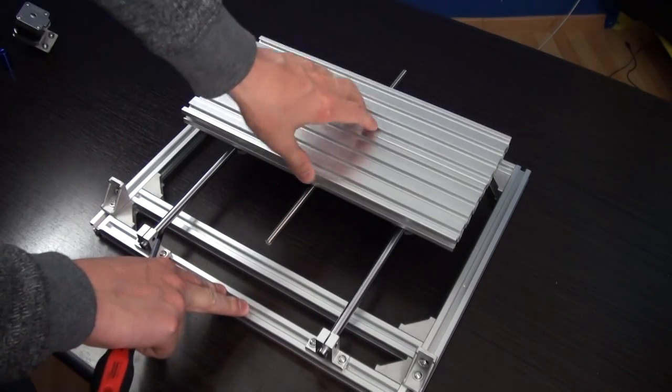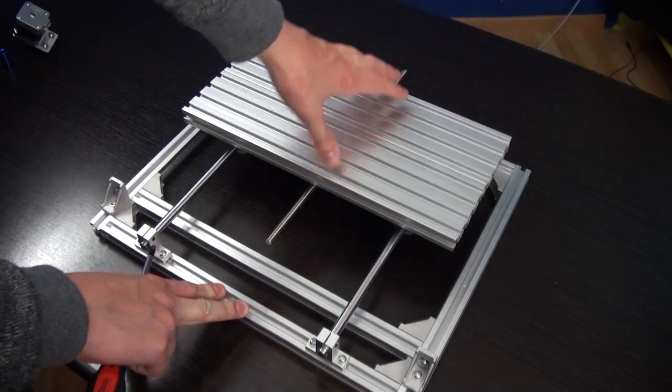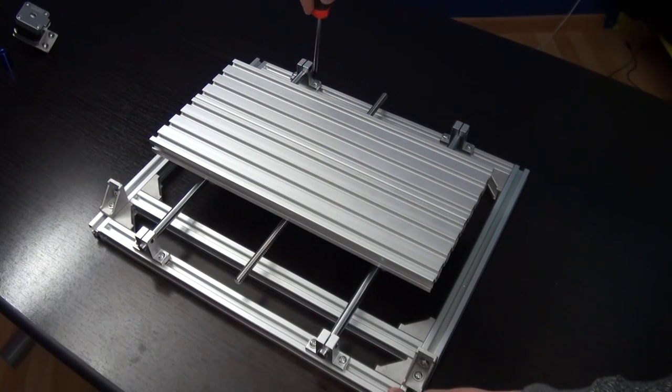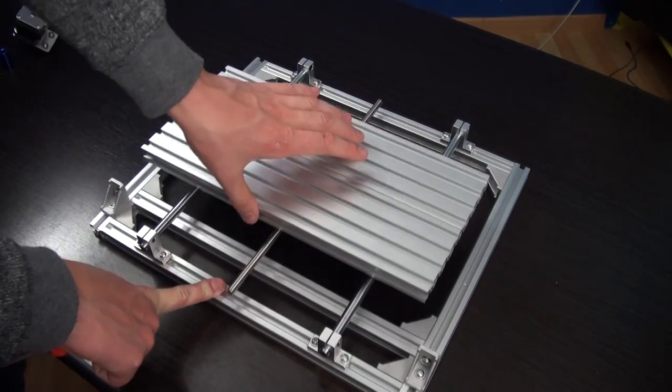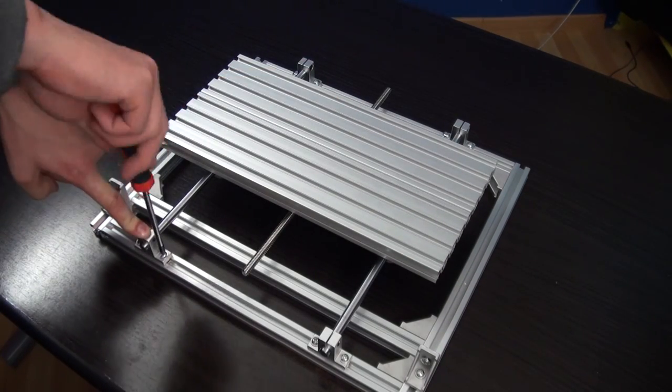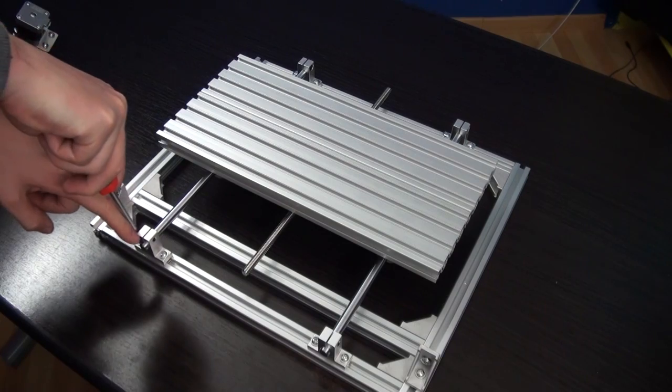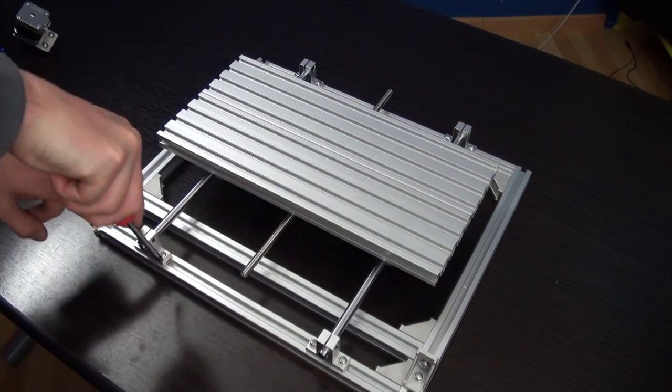Again move the bed a couple of times and secure the third bracket. Repeat this one more time for the last bracket and the bed should now be able to move smoothly on the rails. If this isn't the case, loosen all brackets again and redo this step.